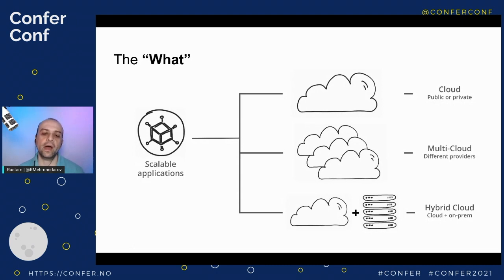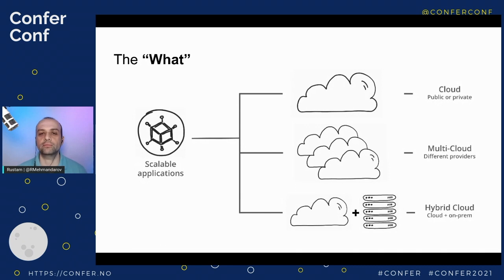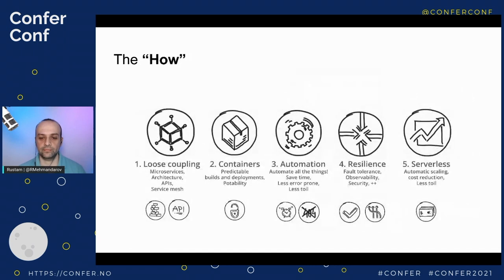So now we have a why — because customers want us to do all those five things we mentioned. We know what we're going to build — scalable applications that can run on the cloud. Now we should talk about how. The five things I'm going to mention can be implemented in any order and in any extent to make your applications better. You don't have to do all five of them, and you don't have to move everything to the cloud immediately. My claim is that as long as you do the things I mention, it will still make your applications better and your life a little bit easier as a software developer.